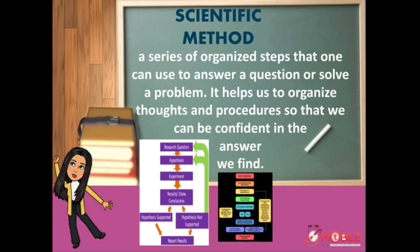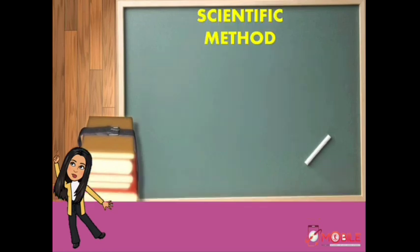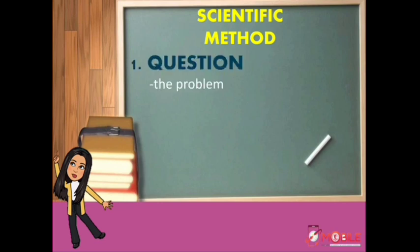However, over the years, steps involved in scientific method varies among scientists. But no matter how many changes, it is very important that you understand the six key steps to characterize the scientific method.